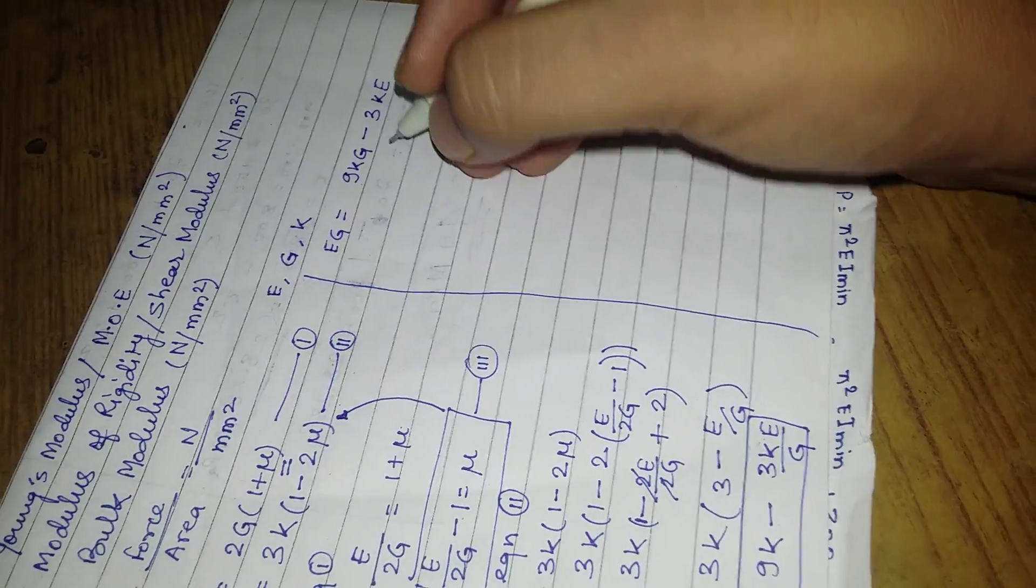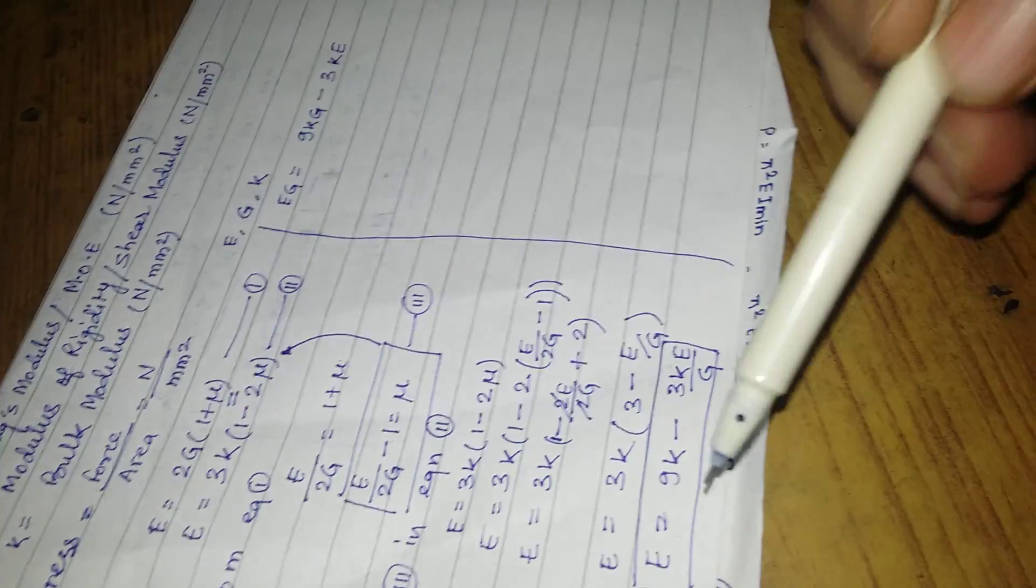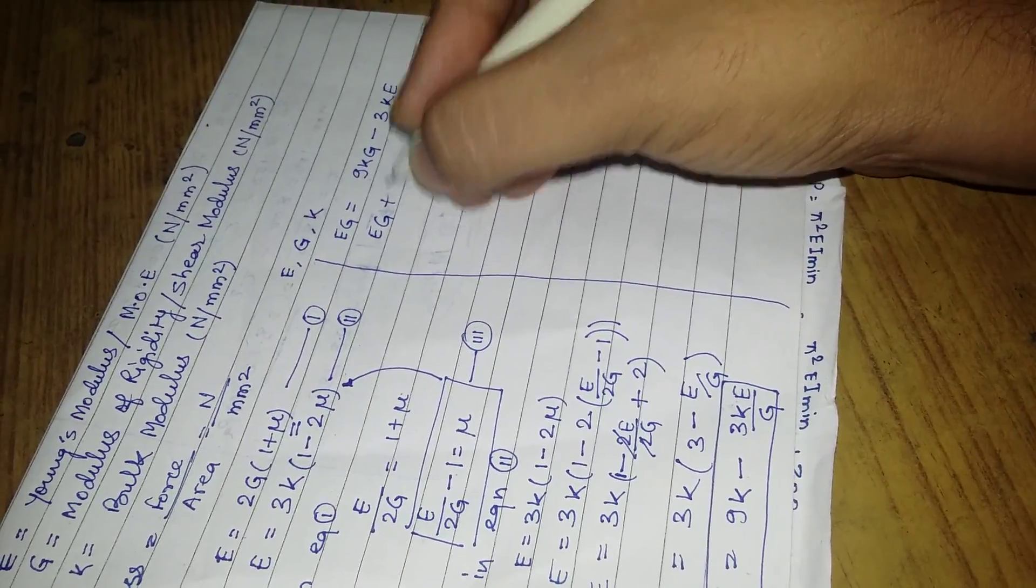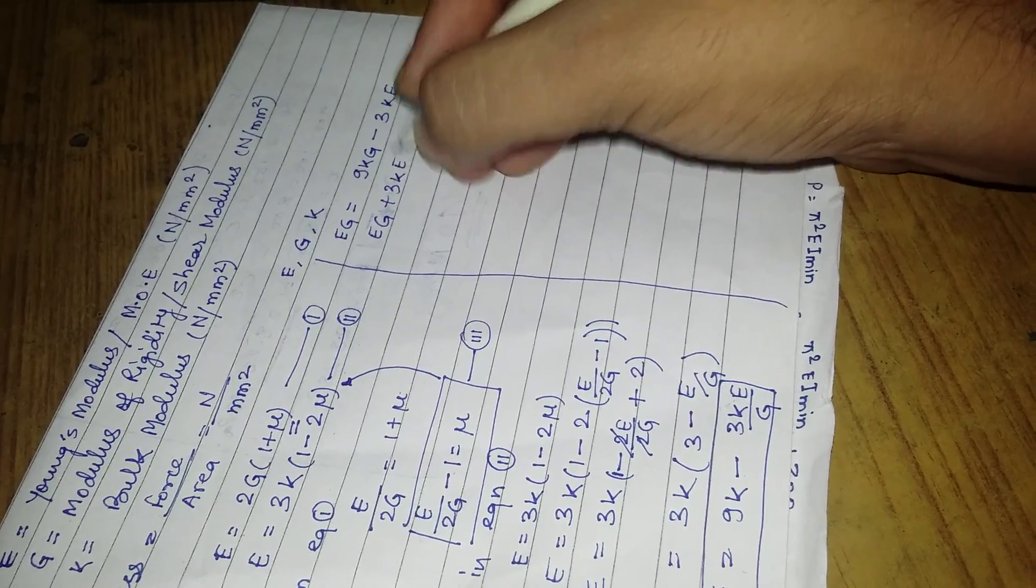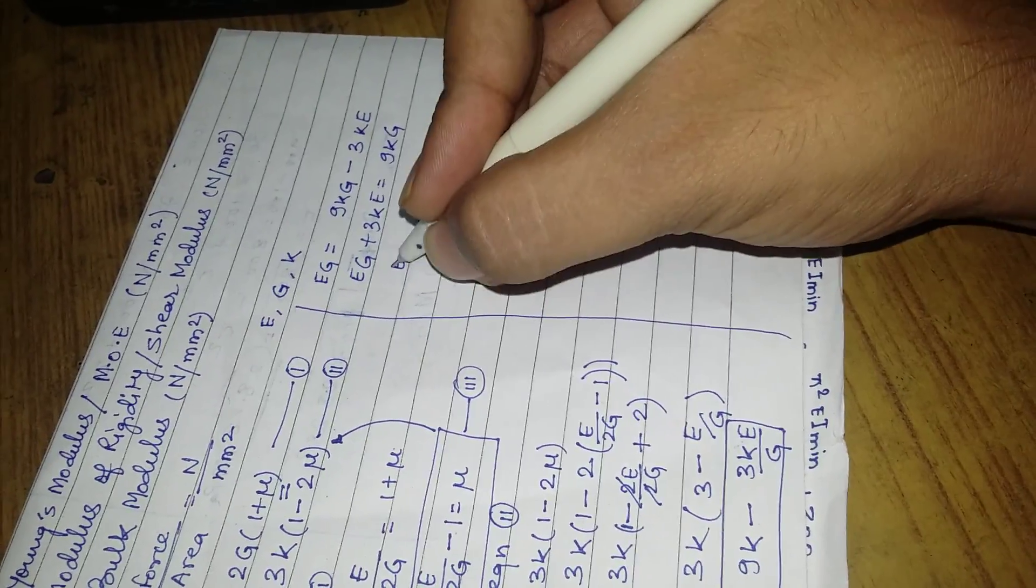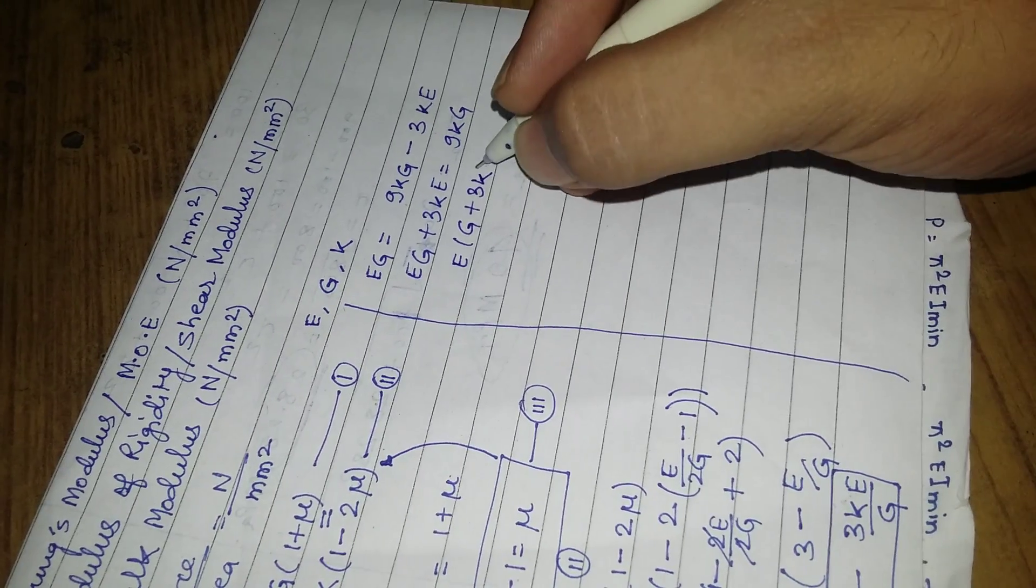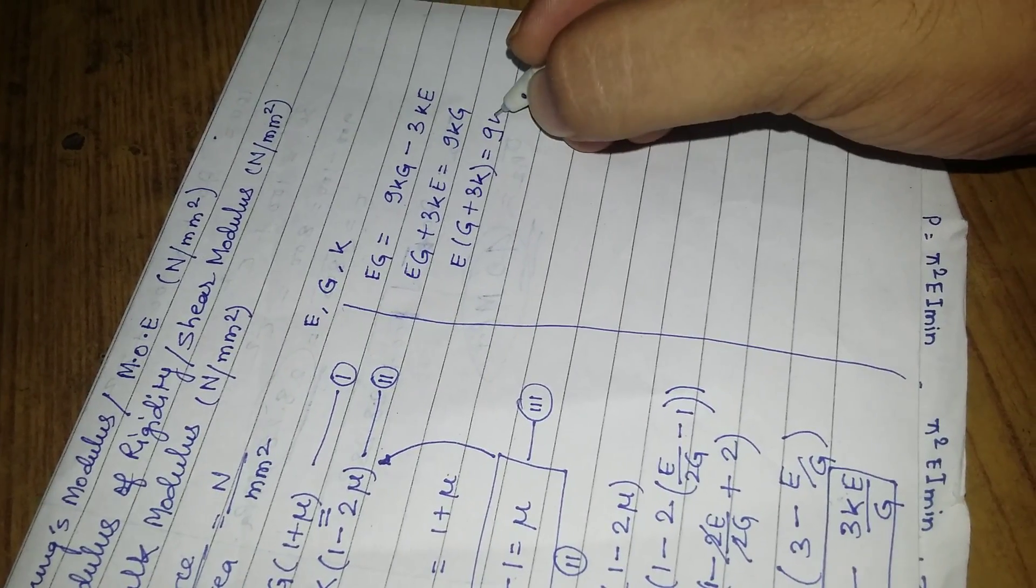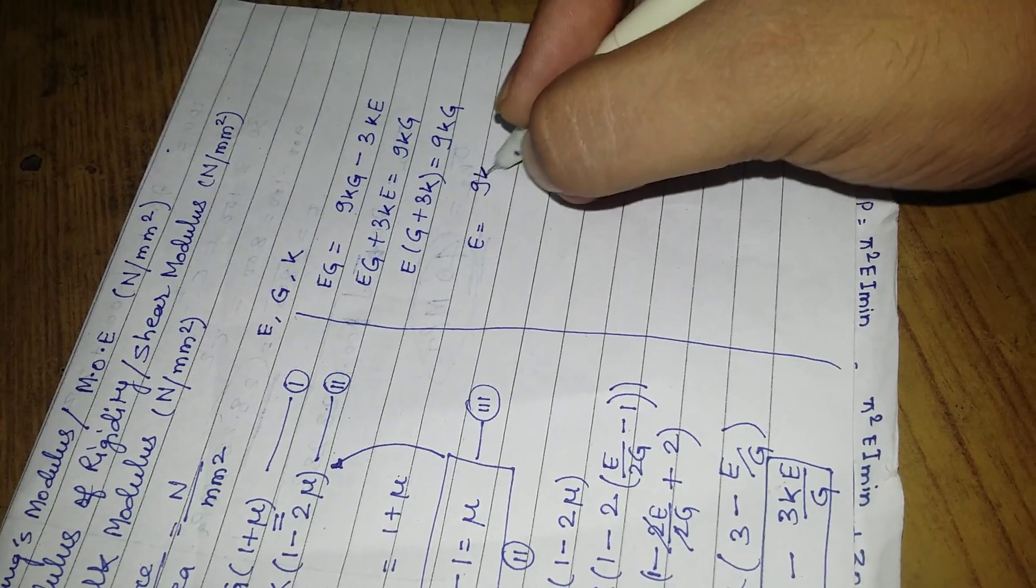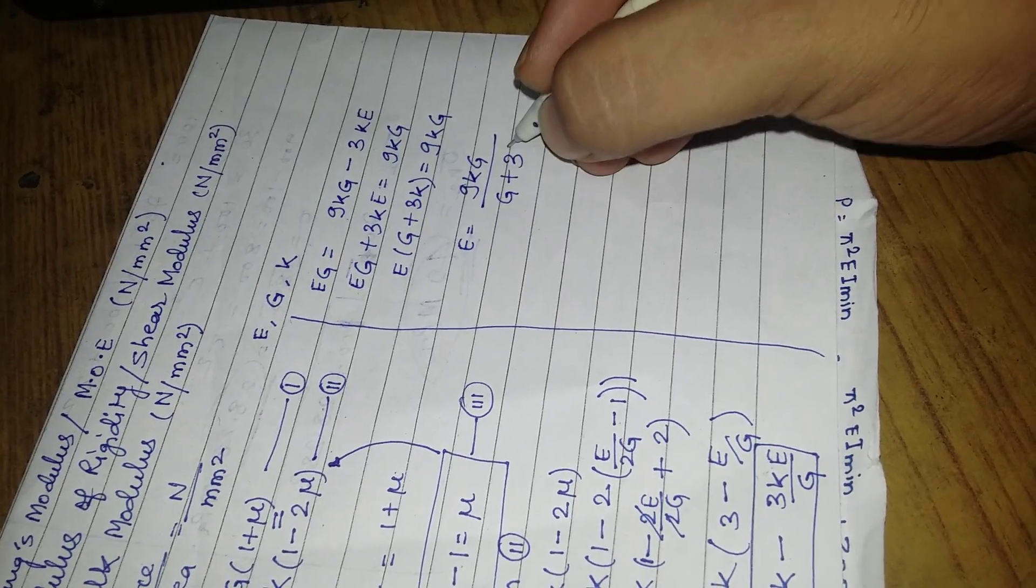Simply multiply both sides of the equation with G, and you get EG plus 3KE equals 9KG. Then take E common and you will get E(G plus 3K) equals 9KG, and then E equals 9KG upon (G plus 3K).